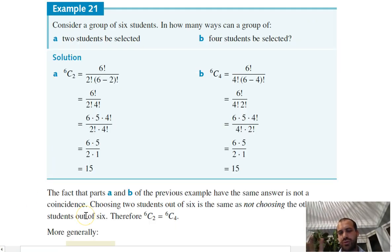Please, to your attention, it's an important piece of the puzzle here. Consider a group of six students. In how many ways can a group of two students be selected? That's going to be six choose two, and you can work through the calculation there, but the answer is going to be 15. Second part of the question: in how many ways can a group of four students be selected? Six choose four, and you work through that, and your answer is 15 as well.